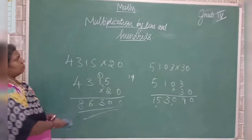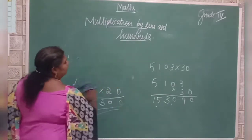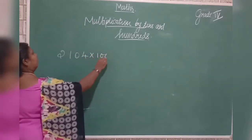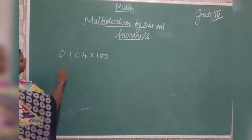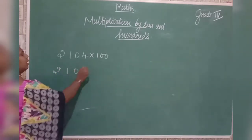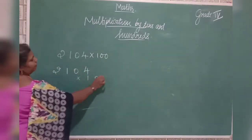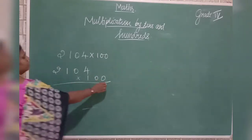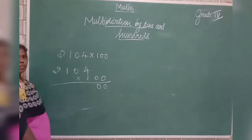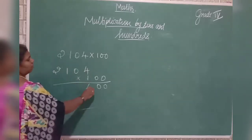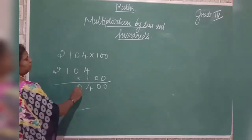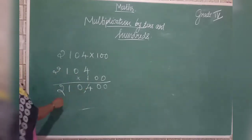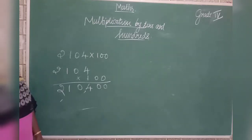Next we are going to discuss about multiplication by hundreds. For example, 2,104 into 100. Two zeros you write at the end. Then use the first table: 1×4 is 4, 1×0 is 0, 1×1 is 1, 1×2 is 2. The answer is 210,400.